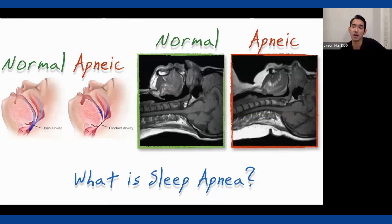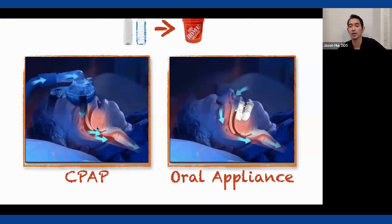I'm not sure what everybody's experience level is with treating sleep apnea with oral appliances, so I want to cover some basics. Your normal patients always have an open airway during sleep. In apnea patients, soft tissue collapses in the back of the throat, blocking airflow. What you're trying to do is open up the airway — whether it's a CPAP blowing things open, or an appliance moving the mandible forward to prevent that collapse.